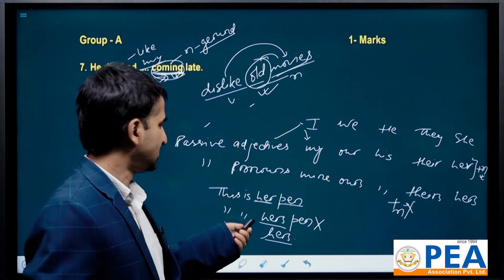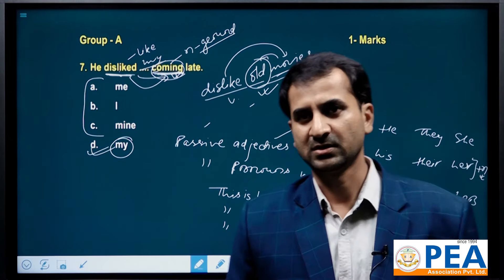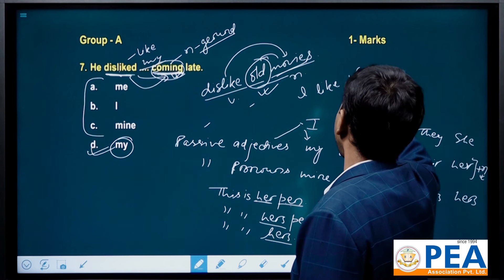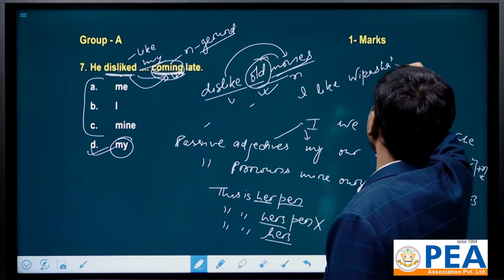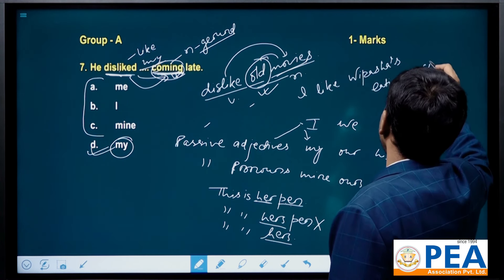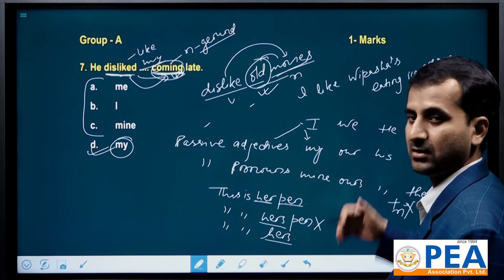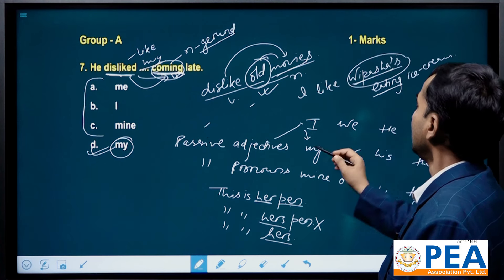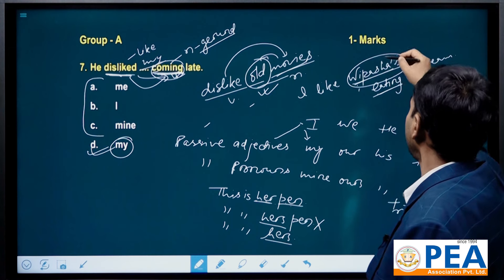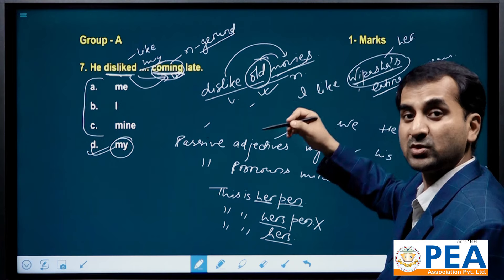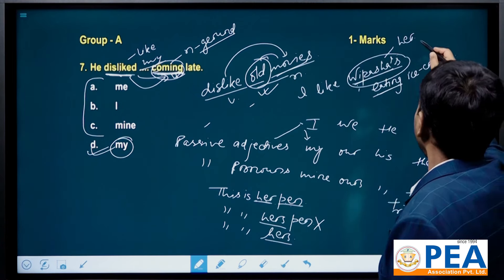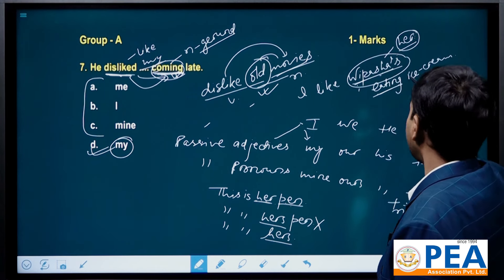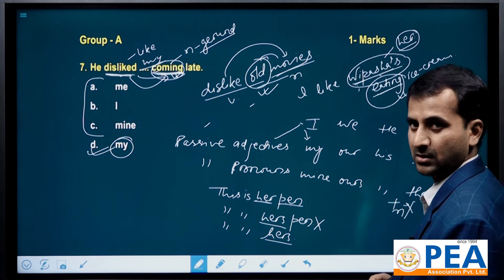In a previous examination on the 29th of Shrawan, there was a question: 'I like Vipassa's eating ice cream.' Vipassa's is a possessive adjective — if replaced, it is replaced by 'her'. An adjective is replaced by an adjective, so 'her' is also a possessive adjective. This adjective takes a noun after it, and that noun is 'eating' — the gerund. That is why 'eating' comes here.